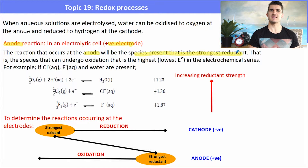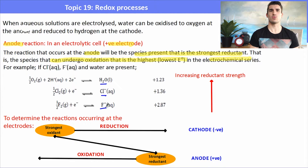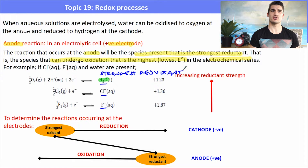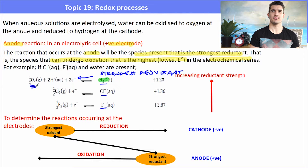At the anode, the positive electrode in an electrolytic cell, the reaction involves the species that is the strongest reductant — the one that can undergo oxidation, which has the lowest E° value in the electrochemical series. For instance, if we have chloride ions, fluoride ions, and water present, arranging those according to the electrochemical series shows that water will be the strongest reductant. So water would be favoured to undergo a reaction at the anode, turning into oxygen gas and hydrogen ions.